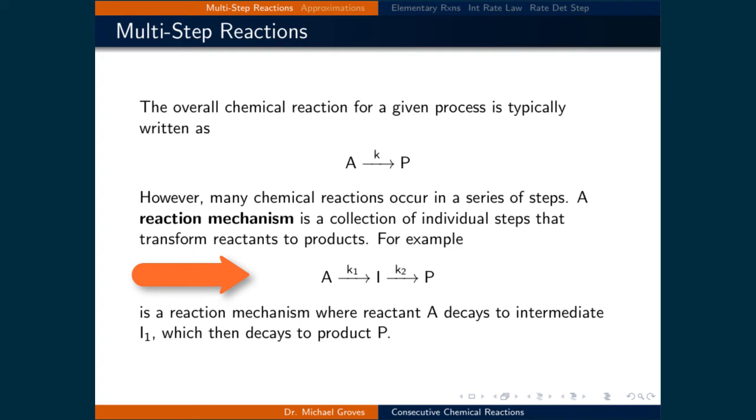For example, the above reaction may in fact involve an intermediate, I, where the reactants A first turn into this intermediate before reacting again to become the product P.